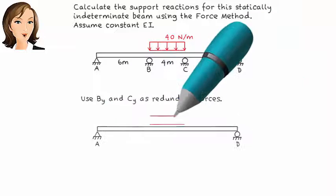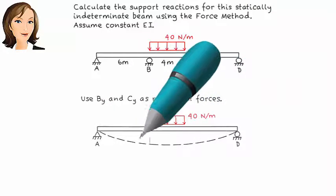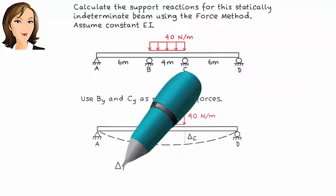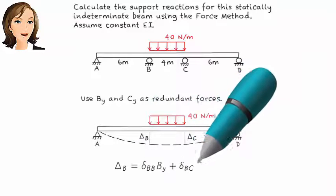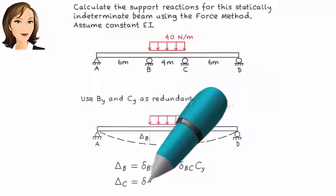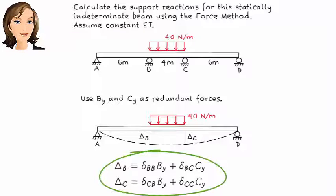After removing the redundant forces, the beam is going to deform like this. We refer to the vertical displacement at B as delta B and call the vertical displacement at C delta C. Then we can write the compatibility equations this way.